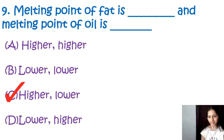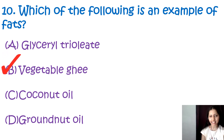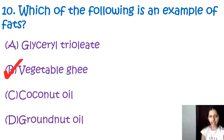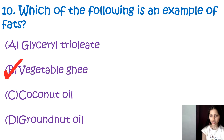Question number 10: Which of the following is an example of fats? Options are glycerol triolate, vegetable ghee, coconut oil, and groundnut oil. The correct option is B, vegetable ghee. Vegetable ghee is a type of fat typically made from the hydrogenation of vegetable oils, and it is solid at room temperature — which is a characteristic of fat.